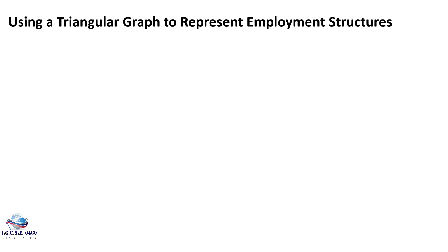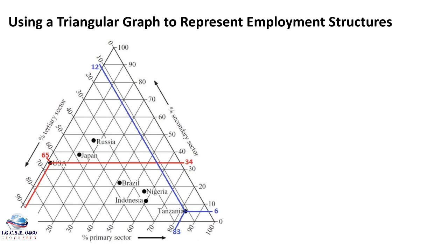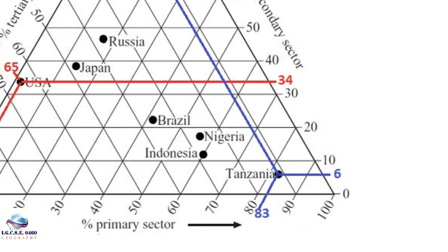Employment structure is also commonly represented by the triangular graph, which is very common in IGCSE exams. Each side of the triangular graph represents a sector, with corresponding lines marked from zero upward, representing percentages from 0 to 100. For every dot on the graph, it represents three figures — the percentage of people employed in each of the three sectors. You must identify which lines and figures correspond to a particular sector.